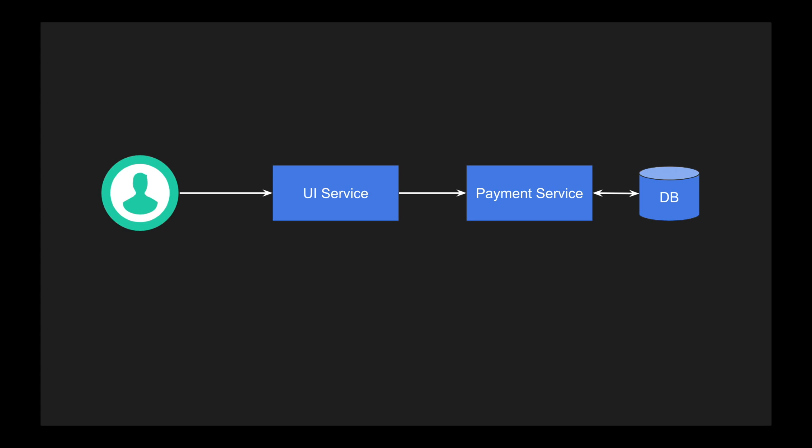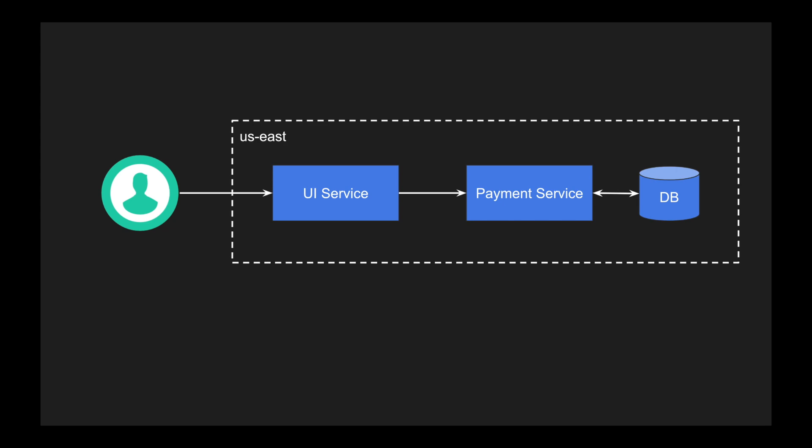This is a simple application where we have two different services — one service is used by the user directly, the other service connects to a database to process some transactions for its business logic. For the sake of this discussion, let's imagine that this particular deployment is present in a data center in US East, and the user is also from the US East region.